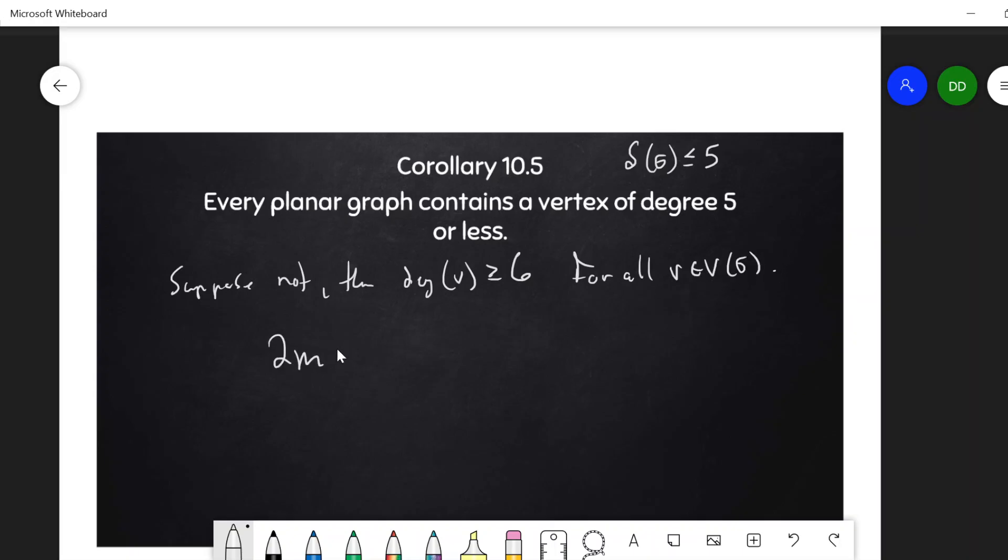Then 2m, this just goes back to the first theorem of graph theory, twice the number of edges. We can get that by adding up the degrees of the vertices, overall vertices in the graph. Here we're saying each one is at least 6, and so that's 6 times the order of the graph, that's 6n.